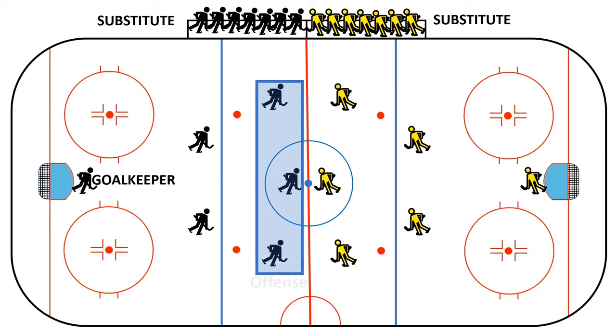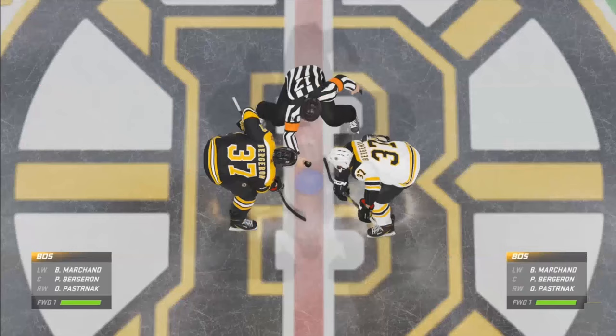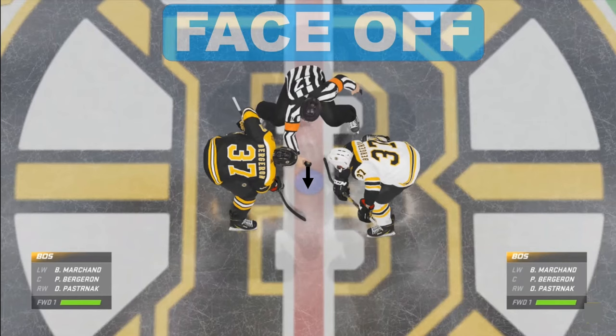In ice hockey there are three referees and the game starts with a face-off, where the referee drops the puck into the blue area at center ice. As soon as the puck hits the floor, players can hit it and the game begins. Here is a real example of a referee dropping the puck into the blue area — as soon as it hits, game is on. This situation is called a face-off.